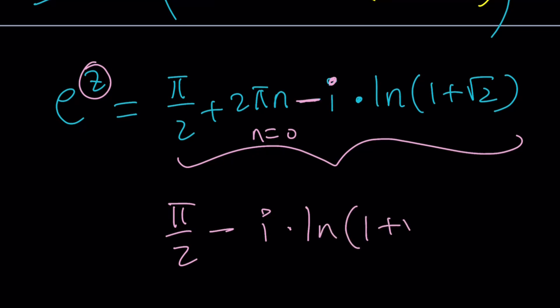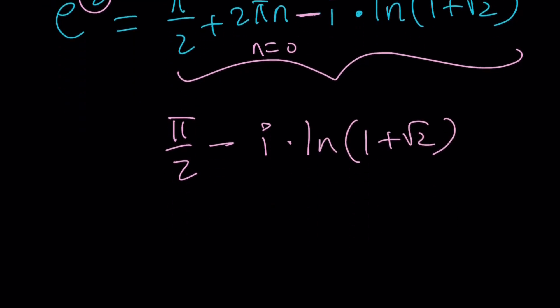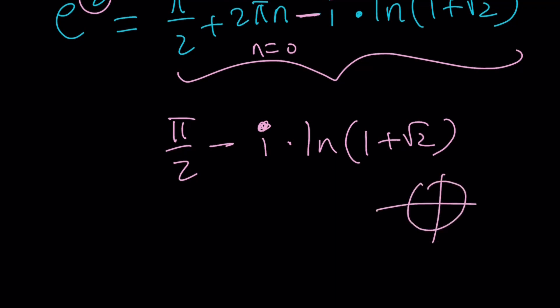So ln 1 plus root 2, obviously, is going to be positive. So our number is going to be in the fourth quadrant. Think about it. Positive x and negative y. So something like this. So its tangent is supposed to be a negative value. But when I do the inverse tan, I'm supposed to use an angle between negative pi and pi. Or is it 0 and pi?